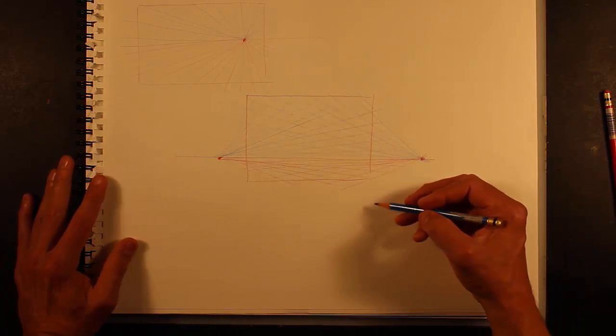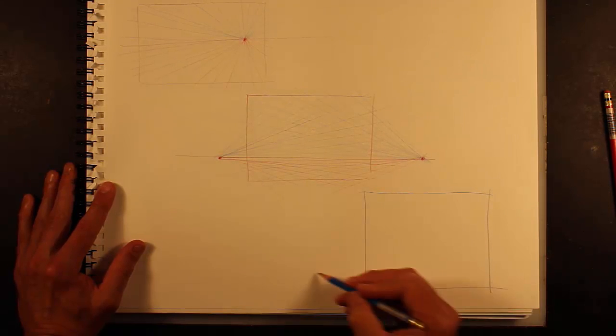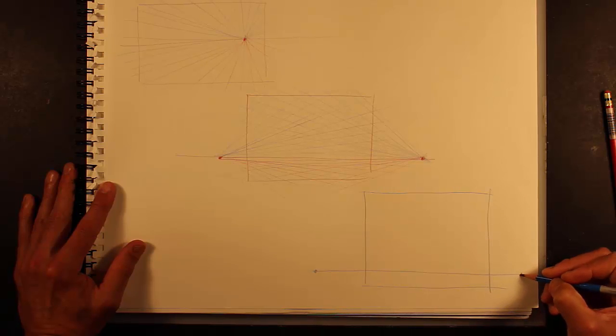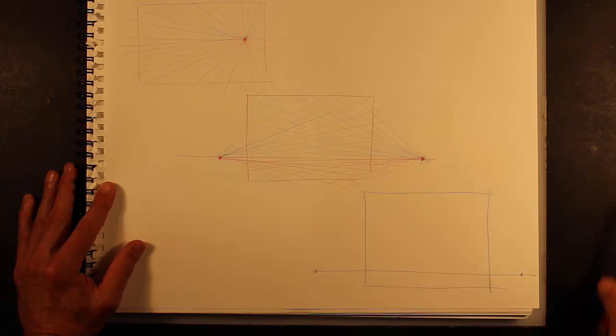A little more complex. Now you just do it three times with the three point. Horizon line here, here, and I'll use that as a vantage point there.